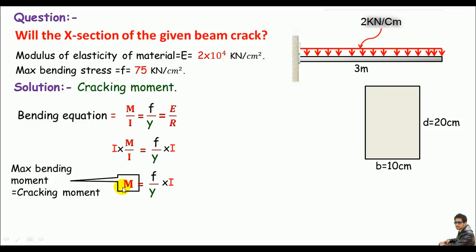Remember, F is given which is the maximum bending stress. Y is given which is the distance from the neutral axis up to the upper fiber of the beam. This time we'll take Y as half of the depth and I is the moment of inertia which is unknown.